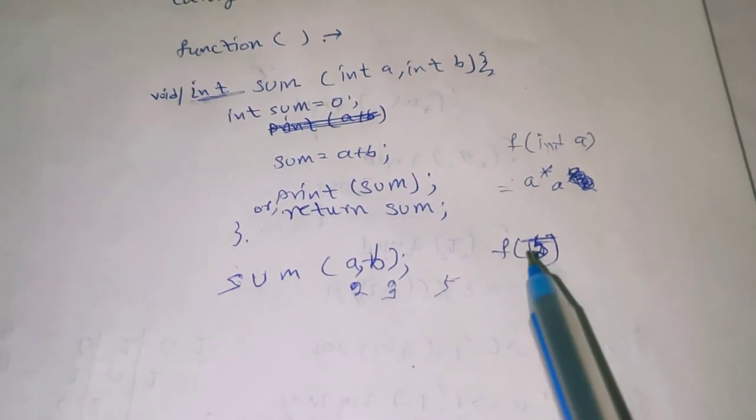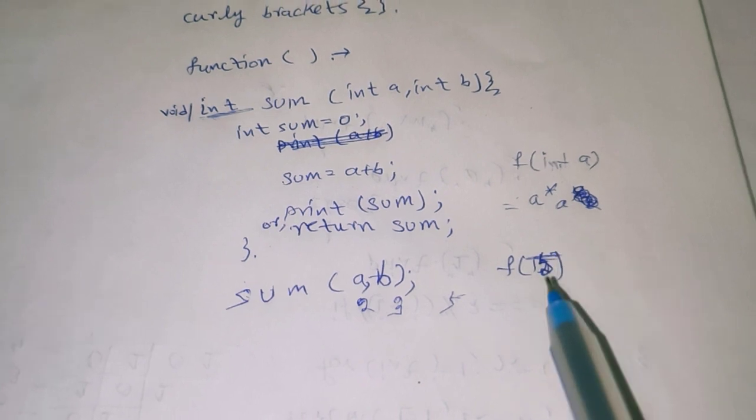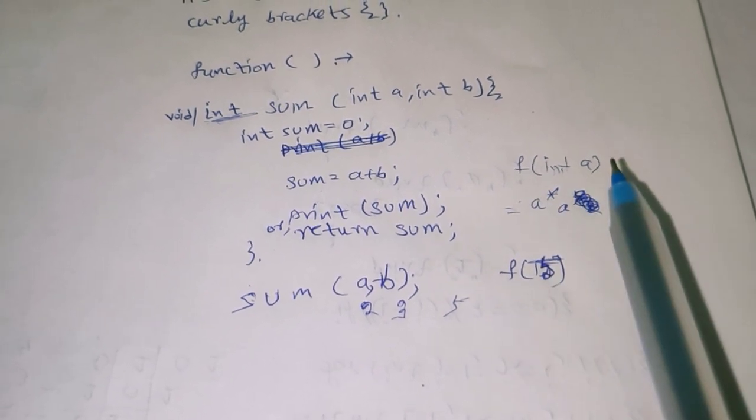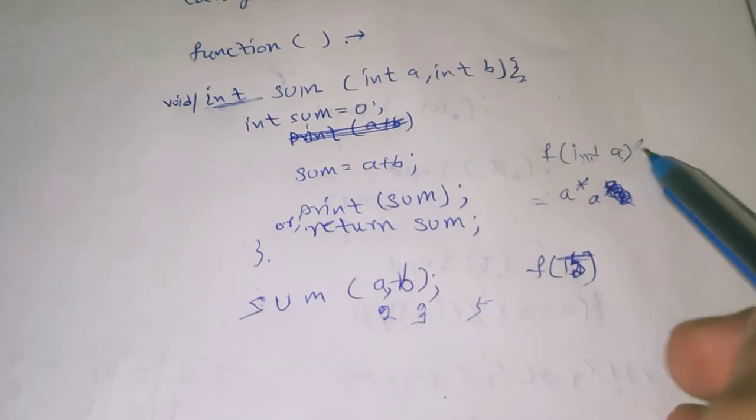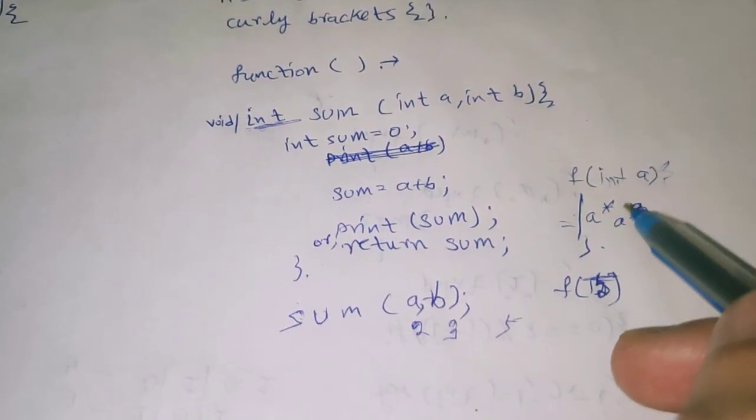So how can we create a function for multiplication with one argument? Suppose we are passing 5. This is our function, this is our function body. How we can proceed? Simply print a into a, means...